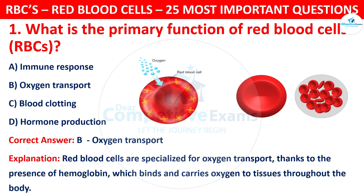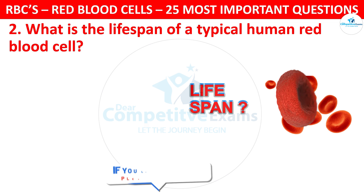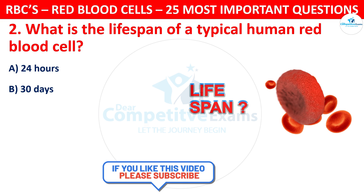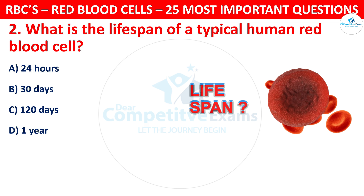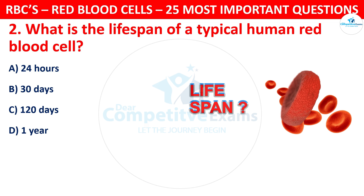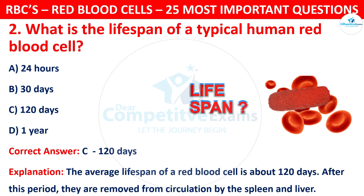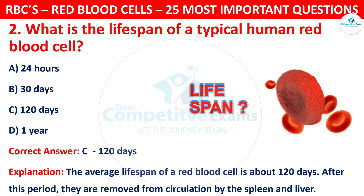Question 2. What is the lifespan of a typical human red blood cell? Your options are: 24 hours, 30 days, 120 days, or 1 year. The correct answer is C, that is 120 days. The average lifespan of a red blood cell is about 120 days. After this period, they are removed from circulation by the spleen and liver.